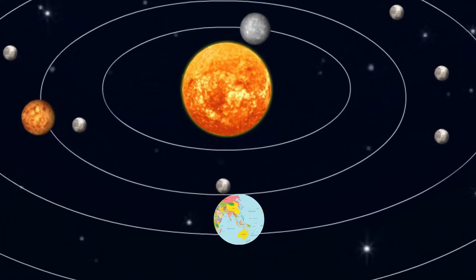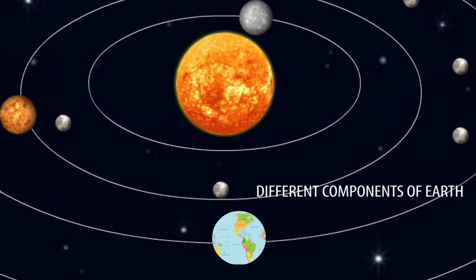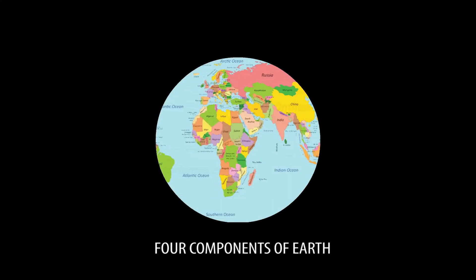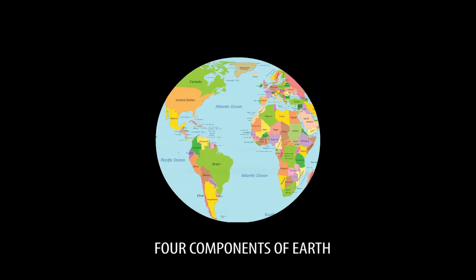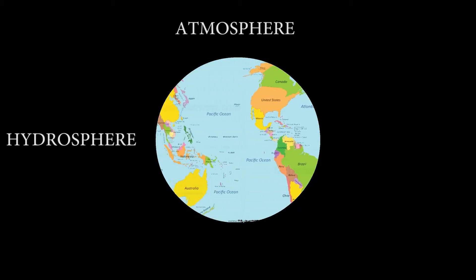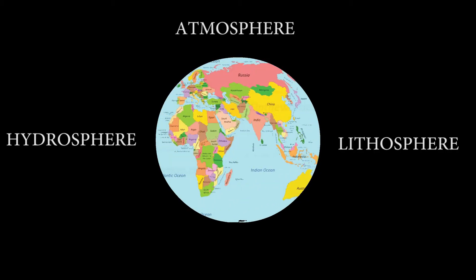In this video, we will learn about different components of Earth. Basically, Earth is made of four spheres or components: atmosphere, hydrosphere, lithosphere, and biosphere.